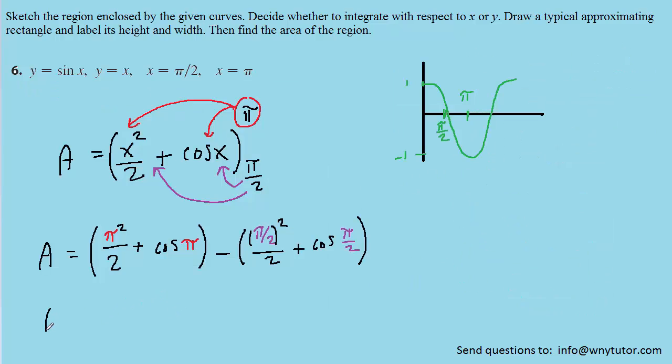We can next simplify a little bit. So in the first parentheses, we're going to have pi squared over 2. And then the cosine of pi can be computed just from memory, or we can look at the cosine curve over here. And we can see that at the value of pi, the cosine is equal to negative 1. So we're going to have plus negative 1, or just minus 1.